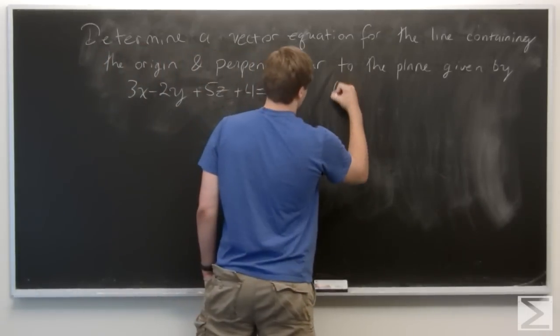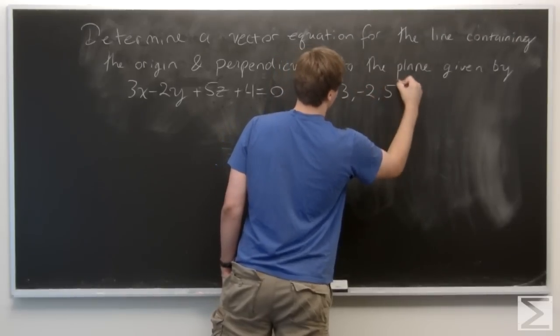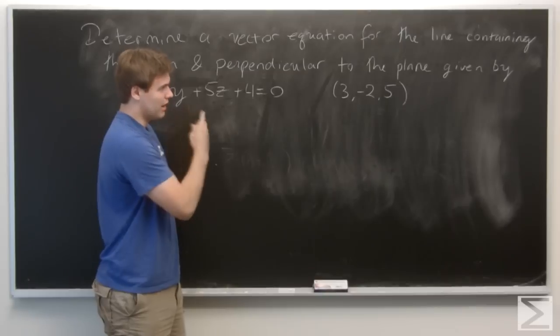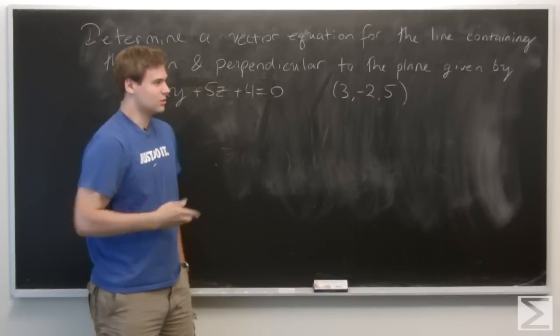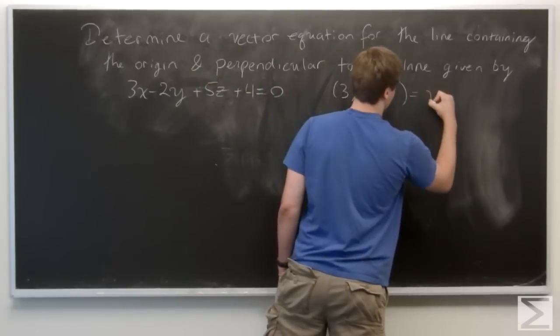So 3, minus 2, 5 is normal to this plane and is parallel to the vector we want. So we have our vector now for free, call this one v.